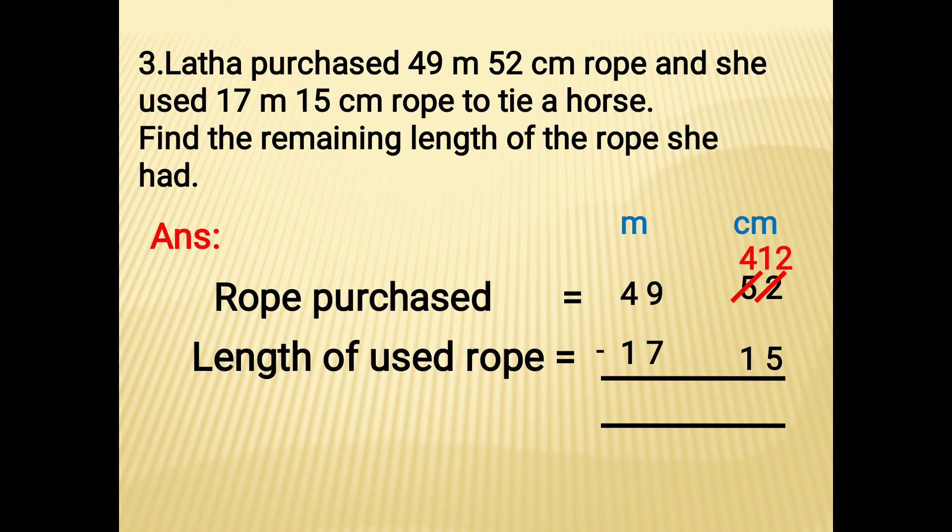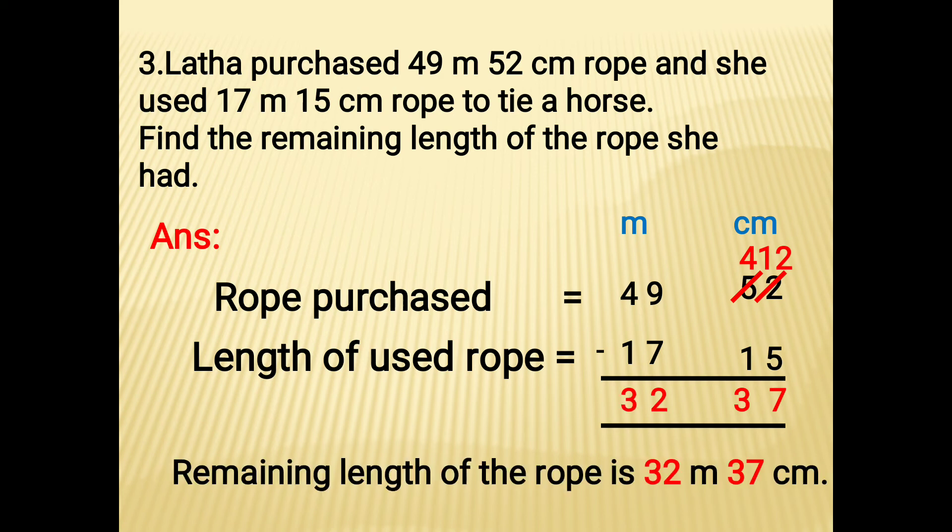12 minus 5 is 7, 4 minus 1 is 3, then 9 minus 7 is 2, 4 minus 1 is 3. Therefore the remaining length of the rope is 32 meter 37 centimeter.